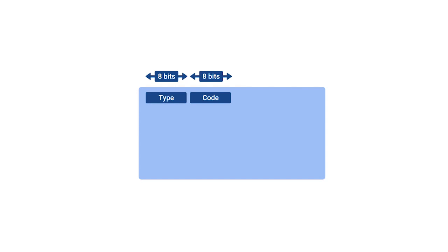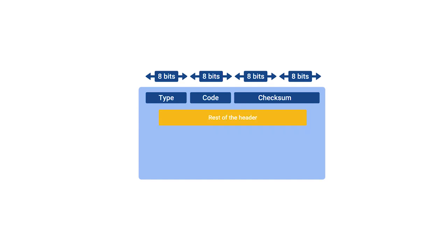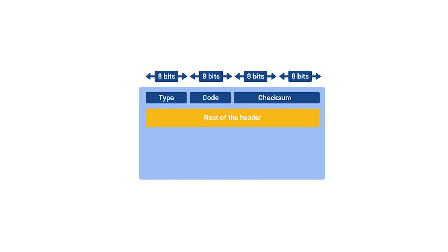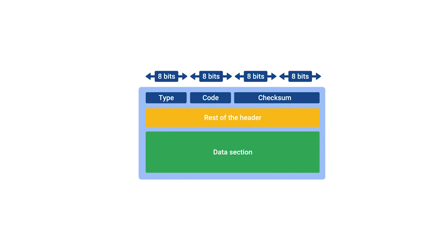After this is a 16-bit checksum that works like every other checksum field we've covered so far. Next up is a 32-bit field with an uninspired name — rest of header — which is optionally used by some of the specific types and codes to send more data. After this is the data payload for an ICMP packet. The payload exists entirely so that the recipient of the message knows which of their transmissions caused the error being reported. It contains the entire IP header and the first eight bytes of the data payload section of the offending packet.